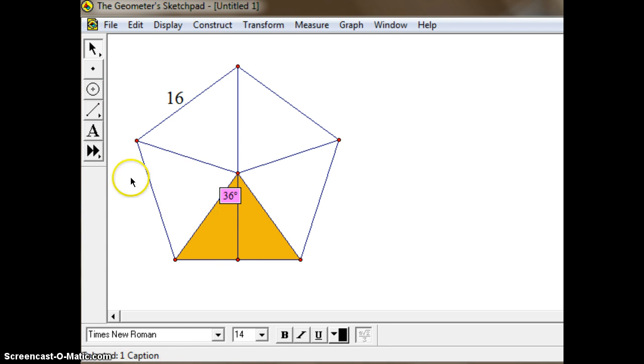So we can use the cosine or the tangent or the sine function. Since x is across from the 36 degrees, that would be opposite. And we know that 16 is the entire side length. So this little piece right here would be half of the side length, which would be 8. So we can use the opposite side being 8 to be able to find this height or the apothem. So we can use the tangent function, opposite over adjacent would be 8 over a.